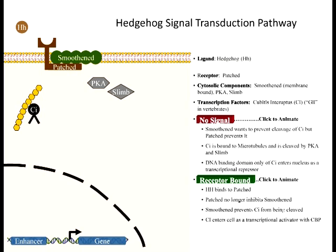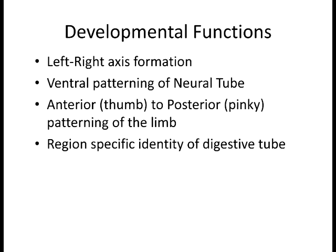When hedgehog binds to patched, you ultimately prevent the cleavage of the CI protein. Instead of becoming an inhibitor, it goes in and becomes an activator and initiates transcription. So when CI is cleaved, it's a repressor. When it's not cleaved, when it enters into the nucleus, it actually turns on transcription. Some of the developmental functions include left-right axis polarity—a huge thing especially in limb development. Sonic hedgehog plays a huge role in digit formation—your fingers and toes—and how they form.